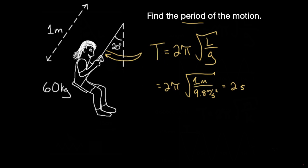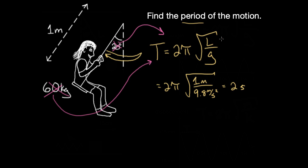Notice we did not use the 20 degrees — that's the amplitude, and the period does not depend on amplitude. We also did not use the fact that the person is 60 kilograms. The period of a pendulum does not depend on the mass of the bob. We only used the length, and on Earth the denominator is always 9.8.